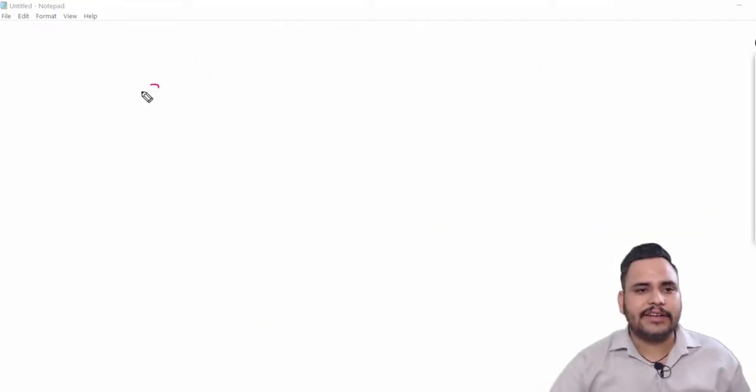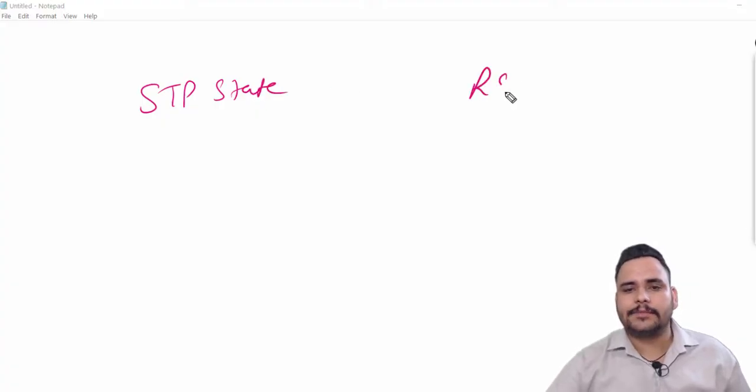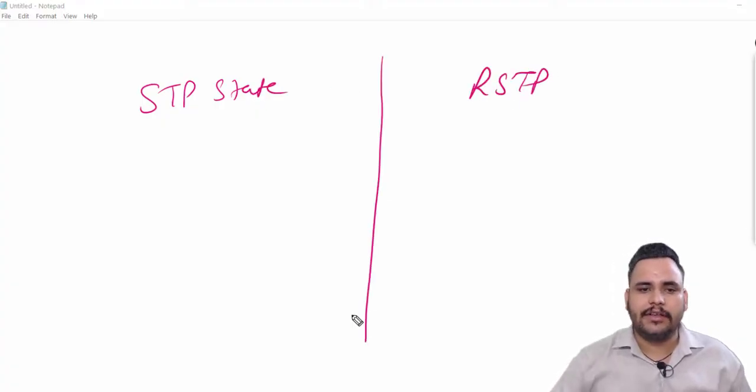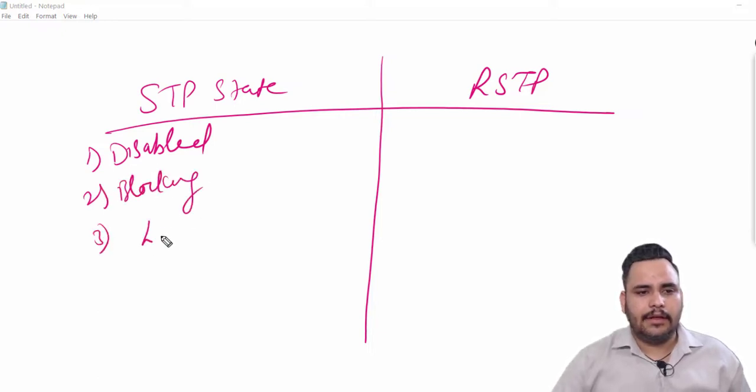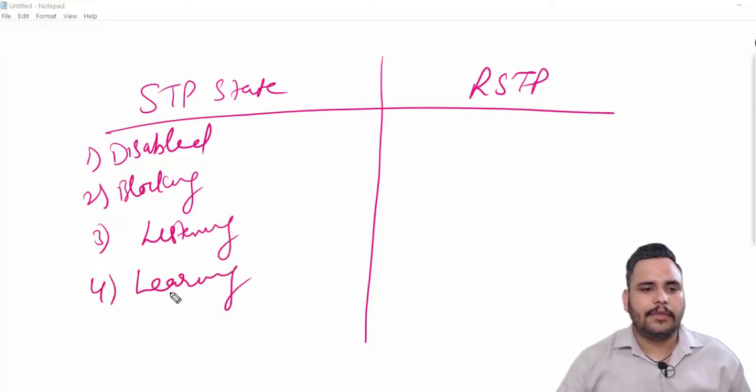Besides this we have STP states and Rapid Spanning Tree Protocol states. First we will check spanning tree states. We have disable state, blocking state, listening, learning, and forwarding.